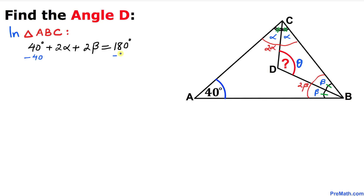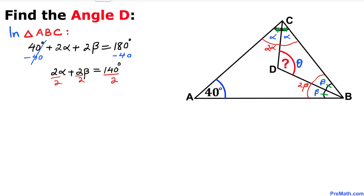Now let's subtract 40 degrees from both sides. That gives us 2 alpha plus 2 beta equals 140 degrees. Dividing both sides by 2, we get alpha plus beta equals 70 degrees.